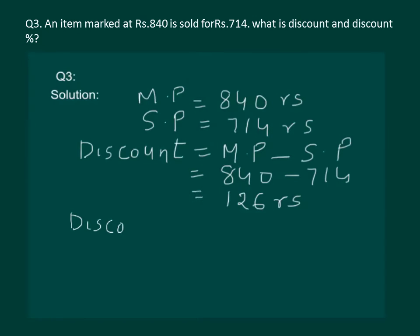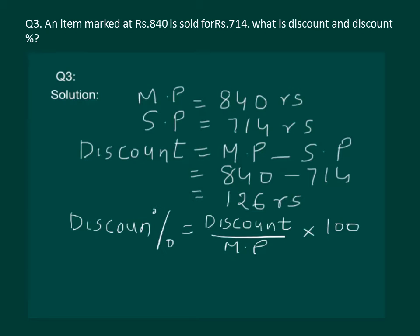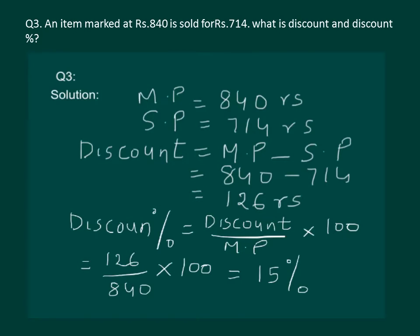Next, we have to calculate the discount percentage. Discount percent is always calculated on the marked price, and the formula is: discount percentage equals discount divided by marked price, multiplied by 100. Substituting the values — discount is 126, marked price is 840 — multiplied by 100, it comes out to be 15 percent. Hence we have calculated the discount and discount percentage.